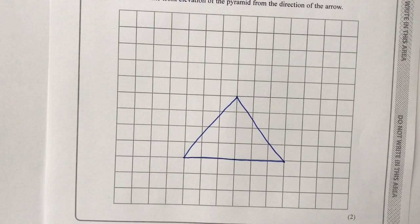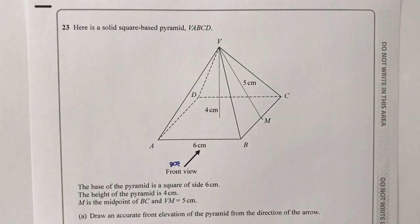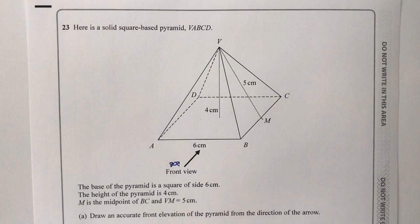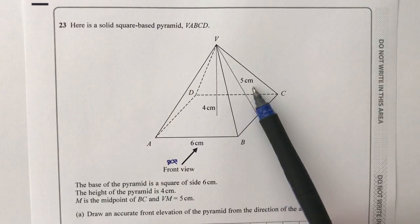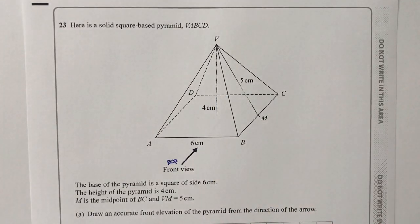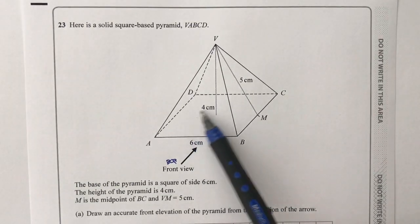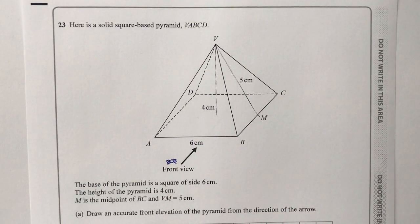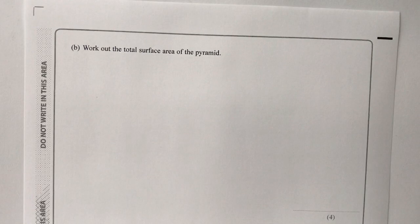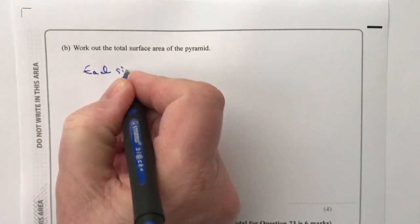The next part is to work out the total surface area of the pyramid. Effectively there are four triangular sides — this triangle, that triangle, the back triangle, and the other side triangle — and we've also got a square base. I'm going to work out the area of each of those and add them together to give the total surface area.